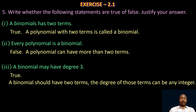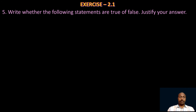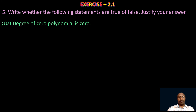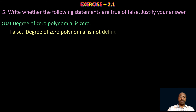Take the fourth one: the degree of the zero polynomial is zero. This is a false statement, because zero is the zero polynomial and the degree of the zero polynomial is not defined.